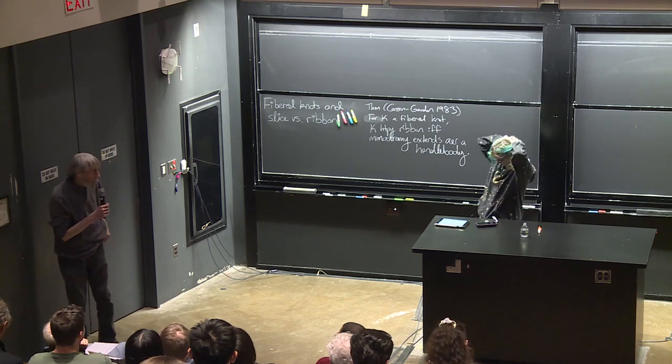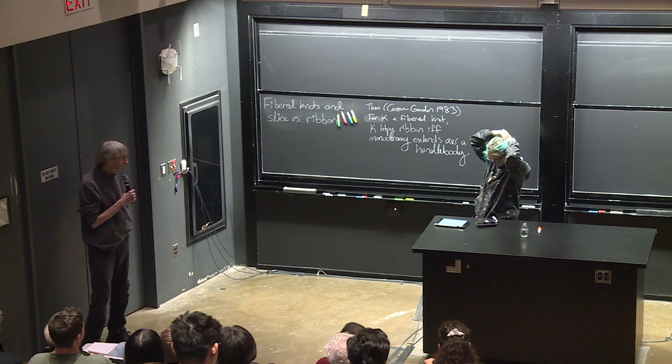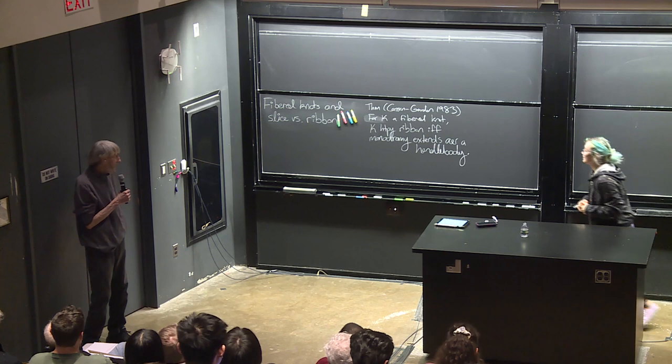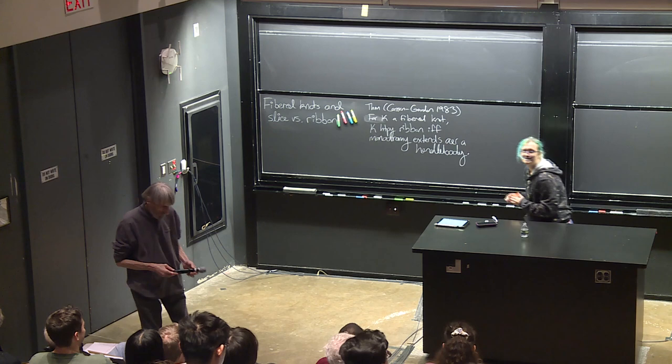Okay, everyone. So this is the second of the BOT lectures, and Maggie Miller is going to tell us about fiber knots and slice versus ribbon conjecture. I think I scared off like half the audience after Tuesday's. That's kind of exciting.